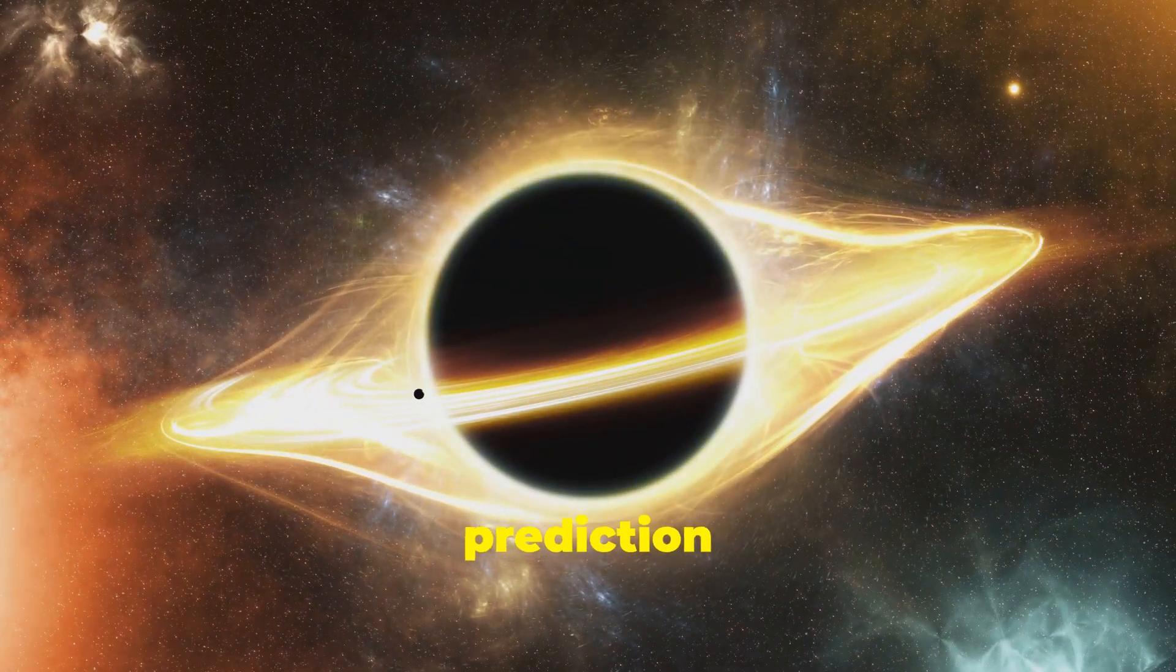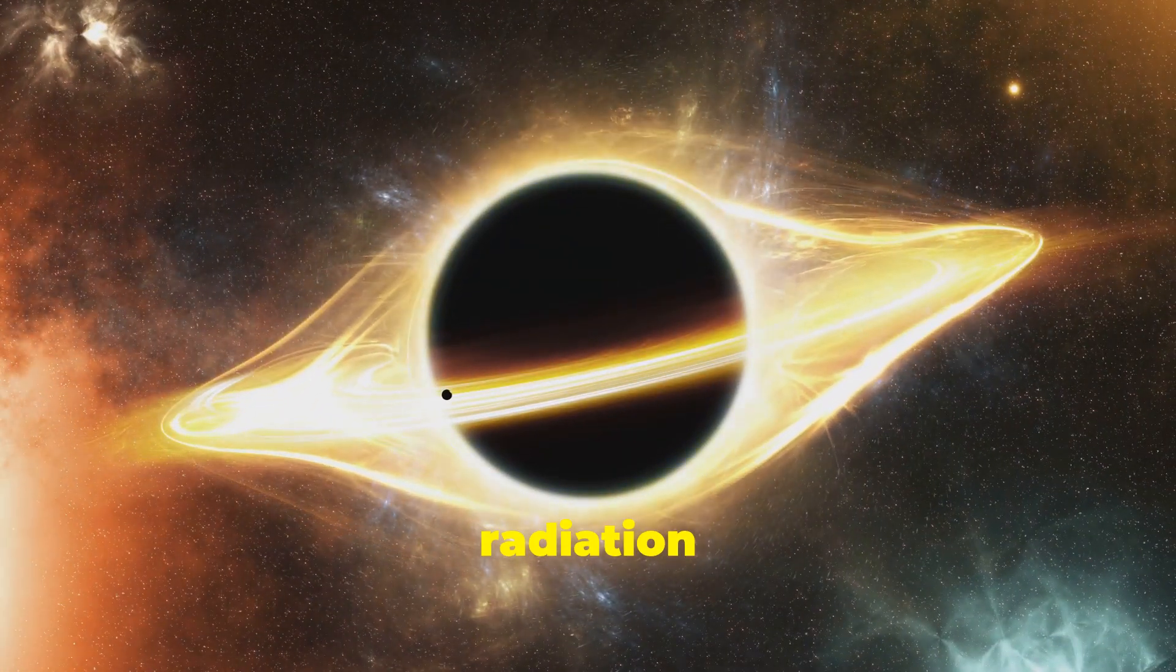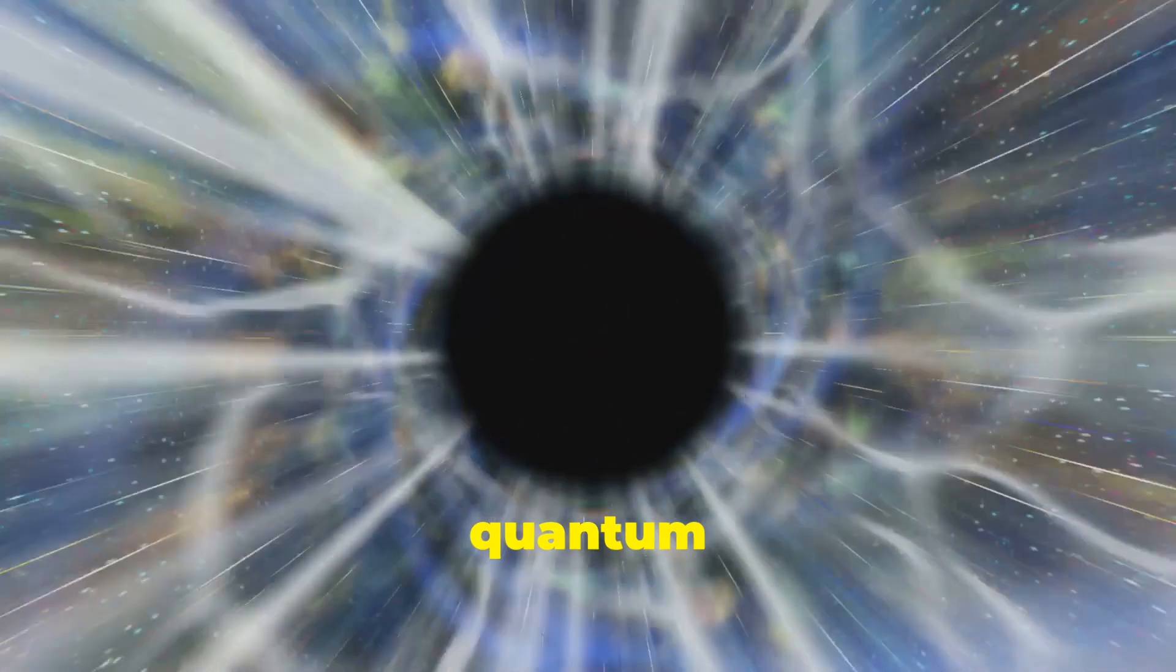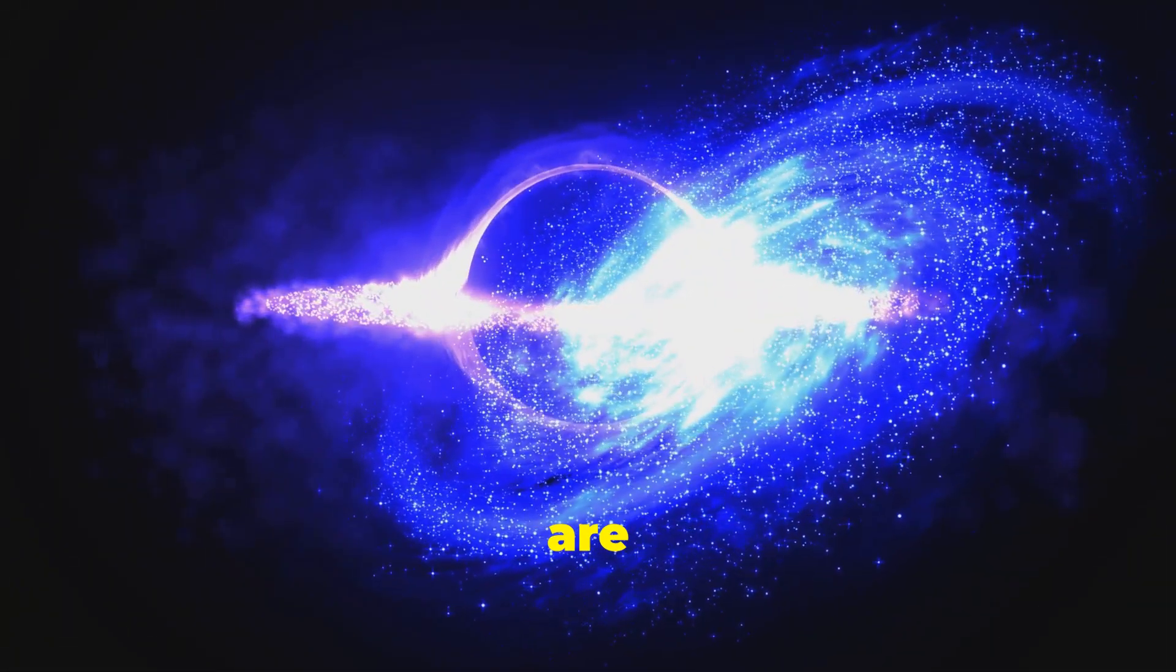Hawking radiation is a theoretical prediction that black holes emit radiation due to quantum effects near the event horizon. This fascinating phenomenon arises from the role of quantum field theory in curved spacetime, where particle-antiparticle pairs are generated.